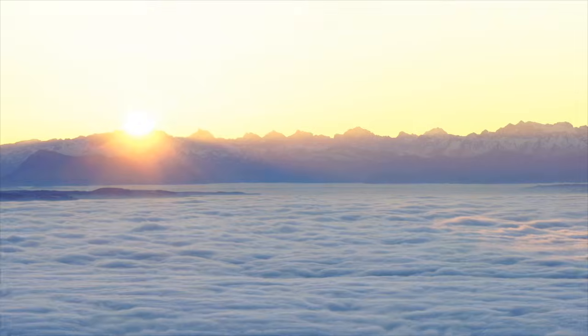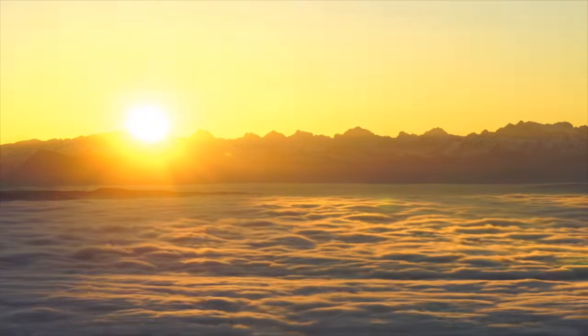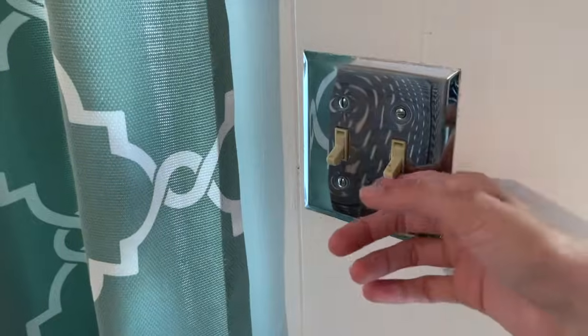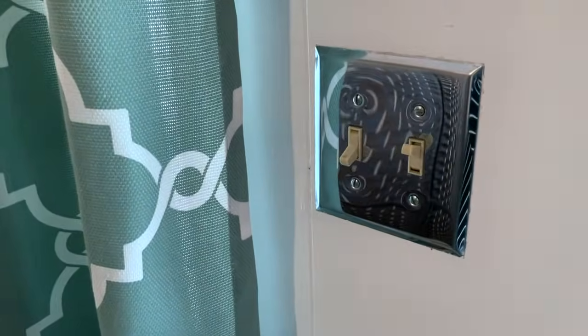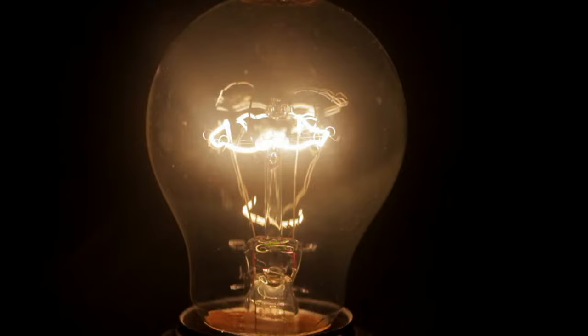Although the sun is the main source of light energy on Earth, electricity can also produce light energy. Energy is stored as electricity in the wiring of your home. When you turn on a light switch, that energy transforms into light energy as it powers light bulbs.